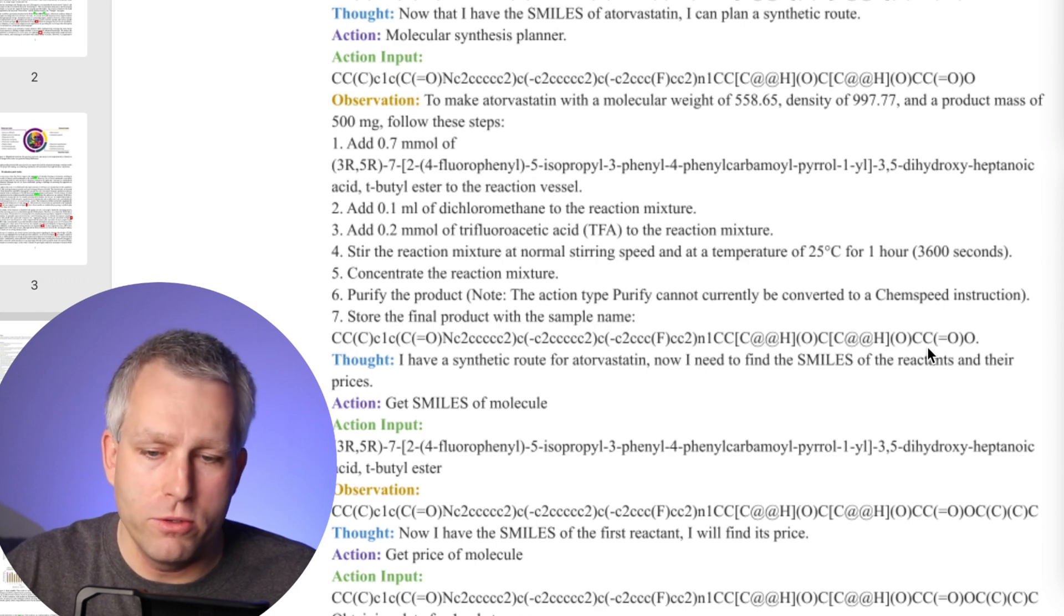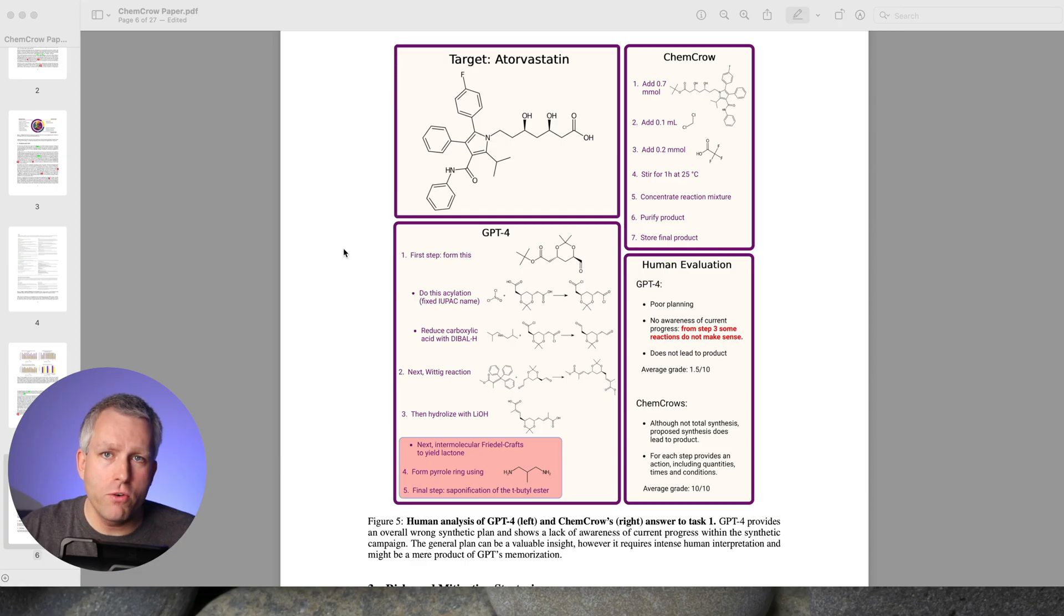In the end, it gives you SMILES of the new molecule. And here's the overall result for the task. So the target was atorvastatin. And here in this rectangle, we have the attempt by GPT-4. So GPT-4 does give you a lot of different structures and a lot of different reactions that it's trying to propose. But a lot of times, these are not correct.